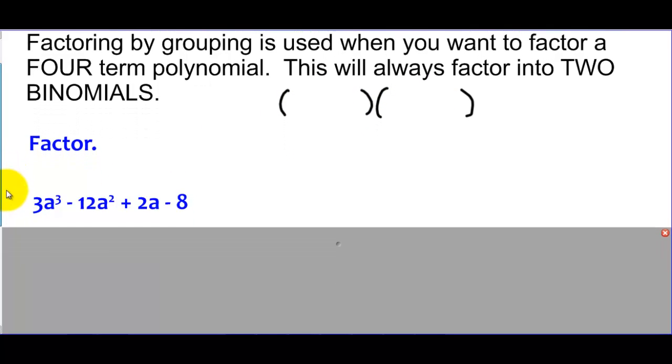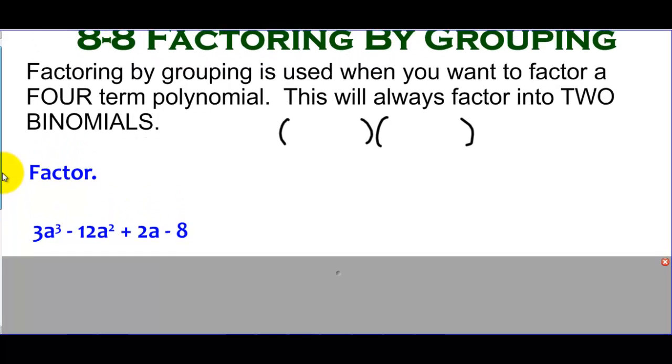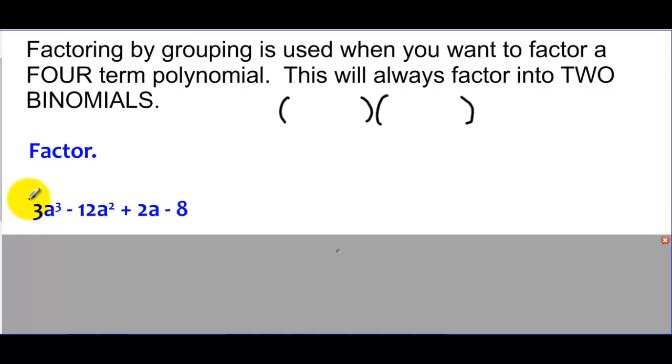So here's the process that we're going to go through for this. It's called grouping because we are actually going to go through and we're going to group the first two in a parenthesis, and we're going to group the second two in a parenthesis, and then we're just going to do the GCF process on each of those groups. So if you take a look at this first group, I'm going to look and say they have a three in common. Three and twelve both have a three.